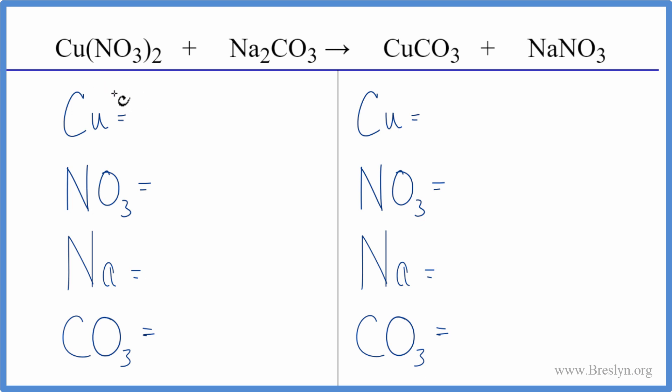When we have these double displacement reactions, it's helpful to think of the polyatomic ions as one thing if they appear on both sides. So NO₃, that's the nitrate ion - we have it here and we have it here. We're just going to call that one item.